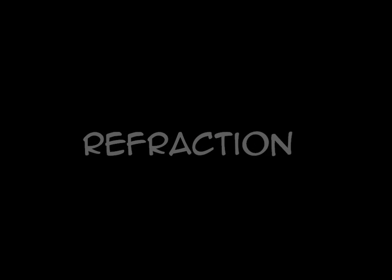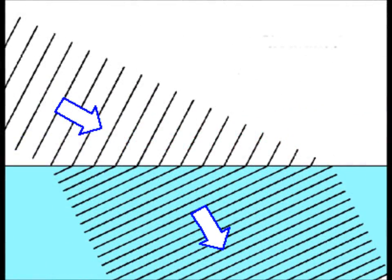Refraction: the speed of a wave is affected by the density of the medium it's travelling through. Wave speed equals frequency times wavelength, but frequency is fixed for each type of wave, so the wavelength must change. When a wave changes speed and wavelength, it causes the wave to change direction. Converging and convex lenses use refraction to focus light waves to form an image.